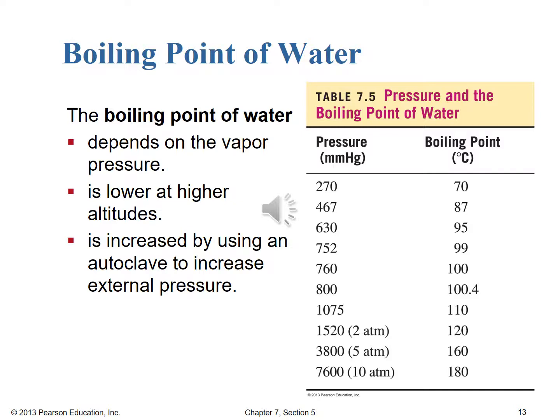The boiling point at 760 mmHg is called the normal boiling point — that's the boiling point at one atmosphere. However, water's boiling point depends on vapor pressure and is lower at higher altitudes, which is why there are high-altitude baking instructions for cakes, where water boils at a lower temperature and therefore requires longer cooking times to get the same result.